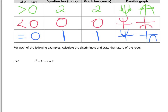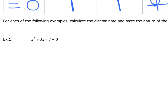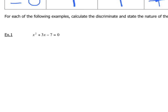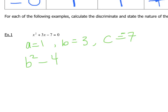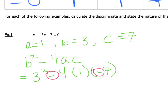For this example, figure out what the discriminant is so you can determine the nature of the roots — meaning how many roots there are: two, one, or none. Here we've got a equals one, b equals three, and c equals negative seven. We need b squared minus 4ac: that's three squared minus four times one times negative seven. We've got a negative times a negative, which gives us a positive number, so we know we're going to have two real roots. Working it all out, we end up with 37, which is greater than zero. So here we have two real roots.